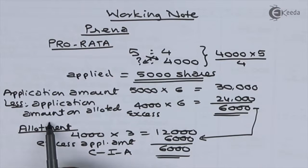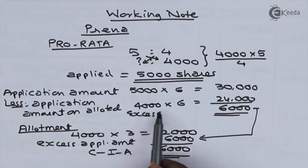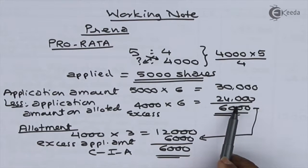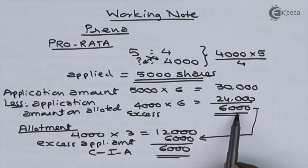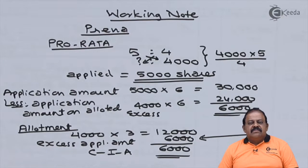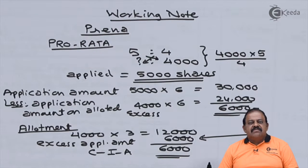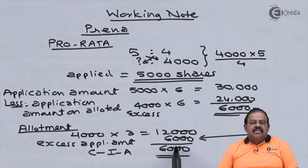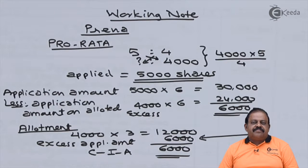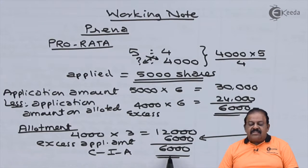Application amount on allotted 4,000 shares at ₹6 = ₹24,000. Her excess application amount was ₹6,000. At allotment she was to pay ₹3 on 4,000 shares = ₹12,000. After adjusting excess ₹6,000, she still owed ₹6,000. She failed to pay this ₹6,000 — recorded as call in arrears.